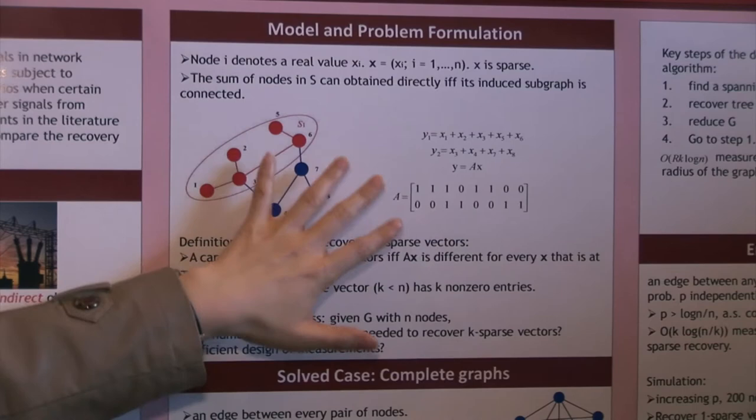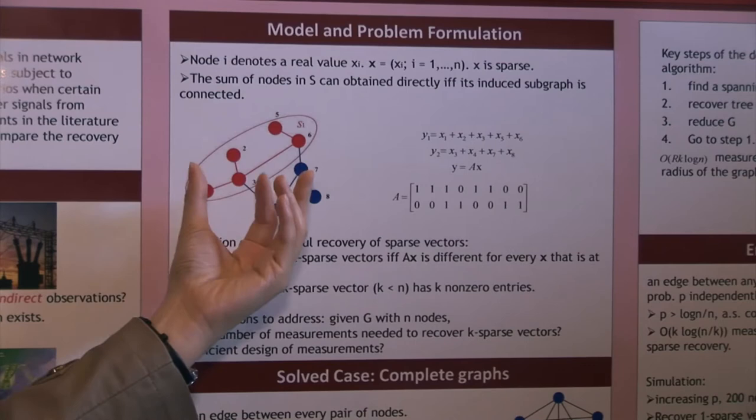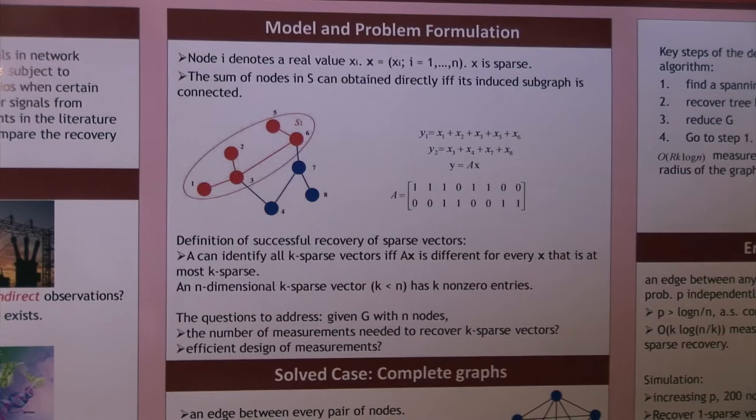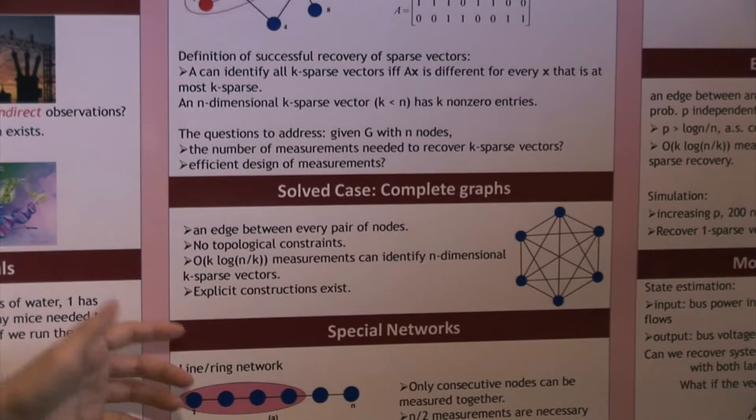Okay. Then the question is, under these, if you have additional topological constraints to characterize the property of whether a subset of nodes can be measured together or not, then the question is, how many measurements do we need to do sparse recovery? So to answer this question, we first consider several special types of graphs. Then we consider constructions on general graphs.